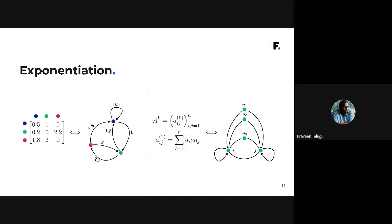The next operation is exponentiation — multiplying a matrix by itself, many times depending on the power of the exponent. If you take a graph A and multiply it by itself, you get a matrix A-squared. The i,j-th element of A-squared represents the number of walks of length two between vertices i and j. So matrix exponentiation gives you the number of walks of a given length between vertices.